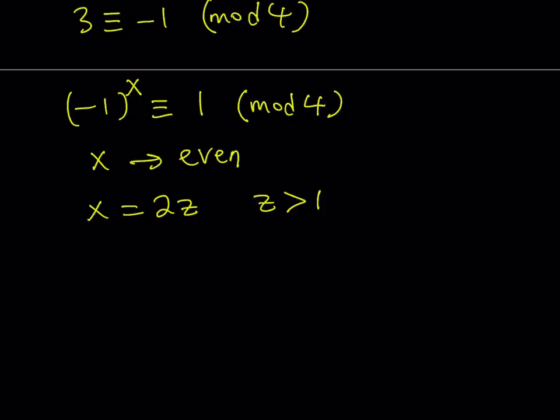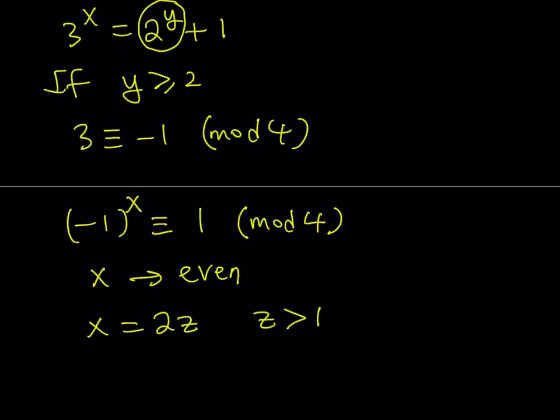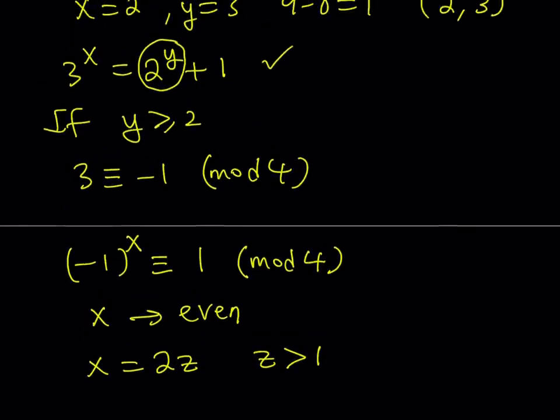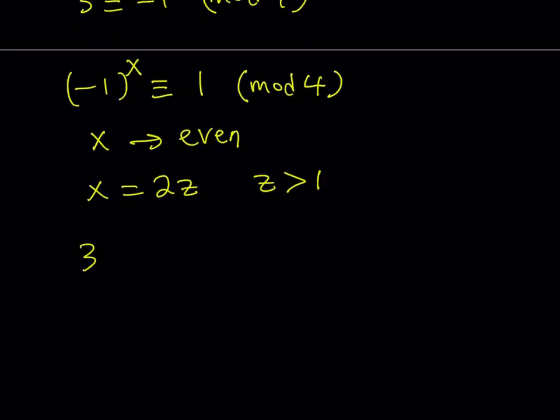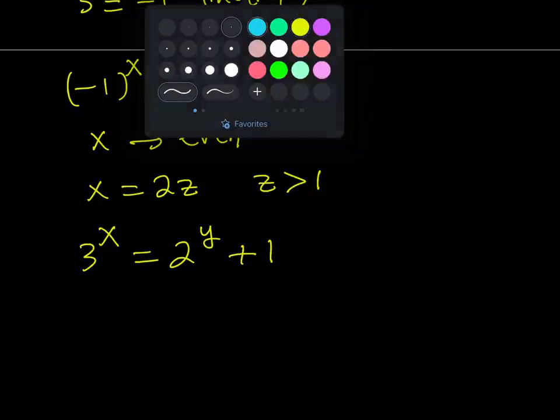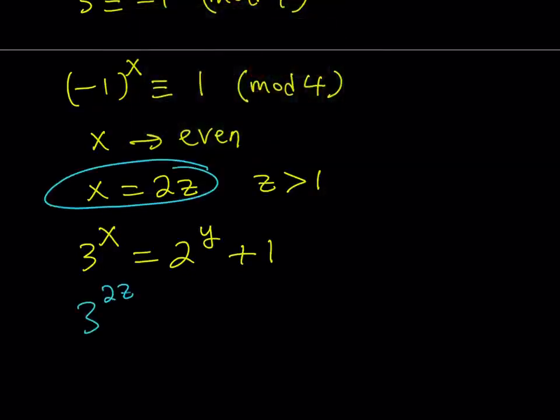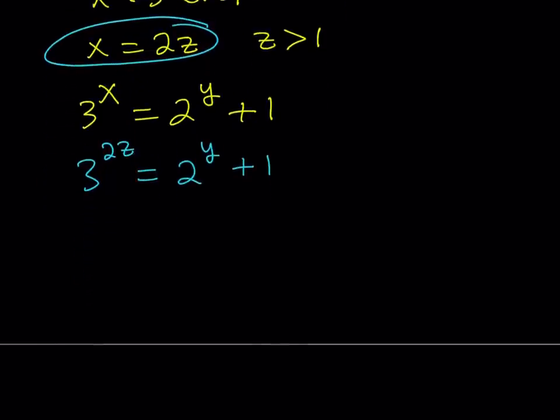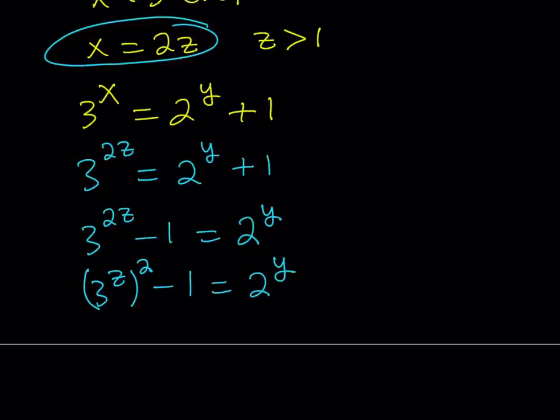So now, since x can be written as 2z, we can just go ahead and substitute that into our equation and see what happens. Now we have 3 to the power x equals 2 to the power y plus 1. If I replace x with 2z, then I get 3 to the power 2z equals 2 to the power y plus 1. Now, this may not look significant, but if you think about subtracting 1 from both sides, it's going to be super helpful. Because on the left-hand side, we are getting a perfect square. This can be written as (3^z)^2 - 1^2, and then it equals 2 to the power y.